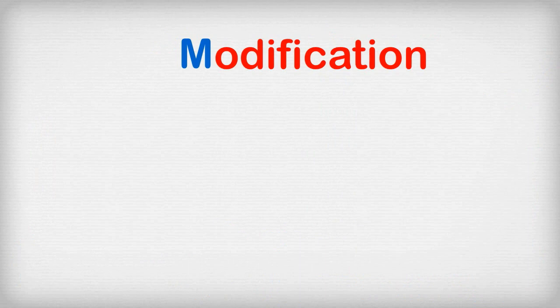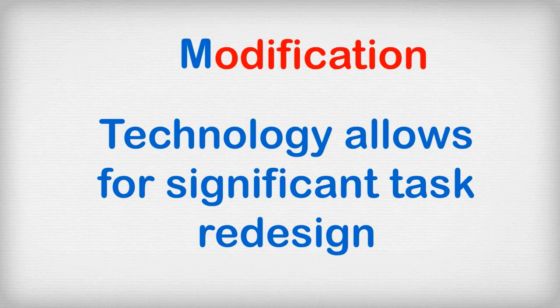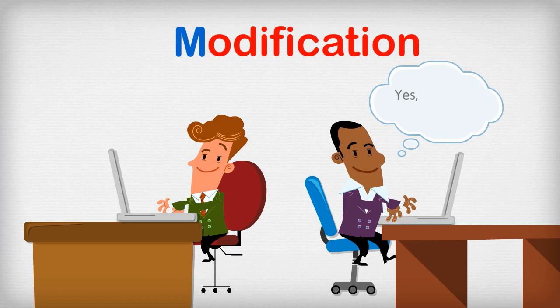M stands for Modification. In this part of the model, technology allows for significant task redesign. This is the first step in the model where the traditional tasks happening in the classroom begin to transform. For example, adding comments and collaborating on Google Docs provides immediate feedback for students.